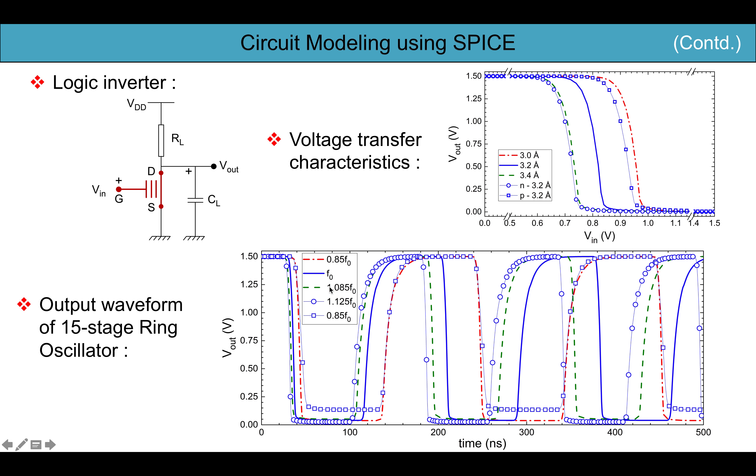We can see here the change in the output frequency of the ring oscillator that happens mainly due to the band gap opening in graphene.